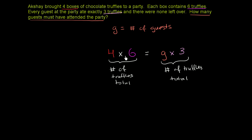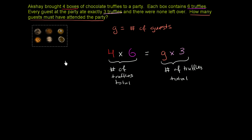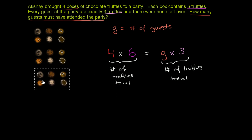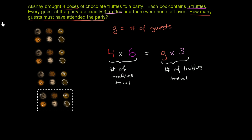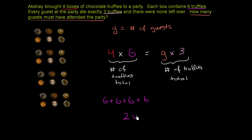So we could figure out what four times six is. Four times six is going to be some number, and G times three has to equal that same number. Let's visualize four times six: one box gives six truffles, so that's one times six, two times six, three times six, four times six — or six plus six plus six plus six — which is 6, 12, 18, 24. So the left-hand side is 24, and this equals the number of guests times three.